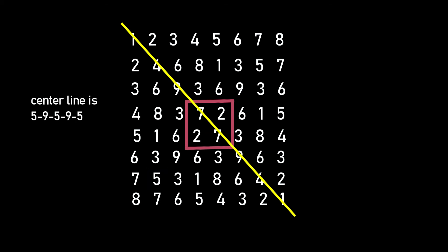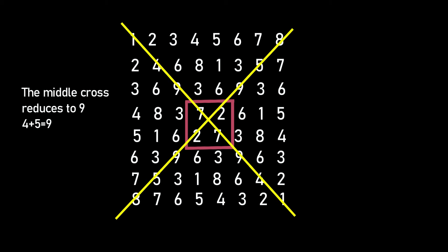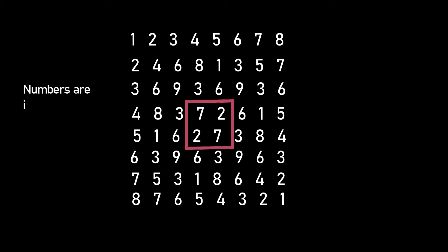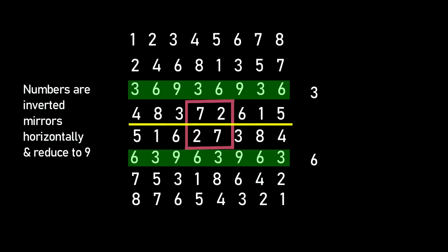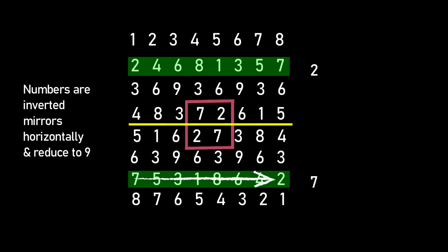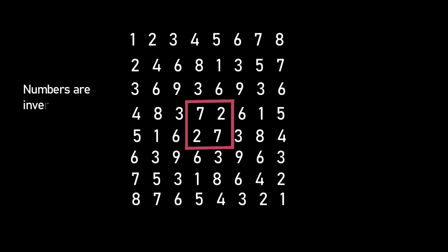Only the center line has a pattern of 5, 9, 5, 9, 5. The middle cross reduces to 9 — 4 plus 5 is 9. Horizontally, numbers are inverted mirrors and reduce to 9. The same is true vertically.